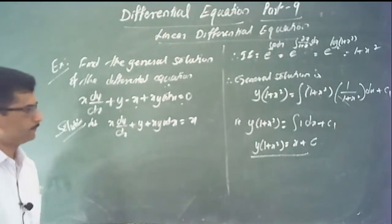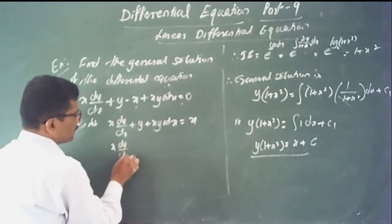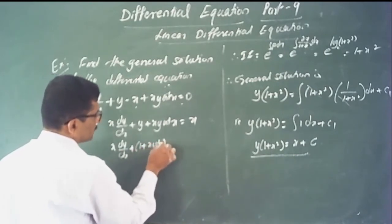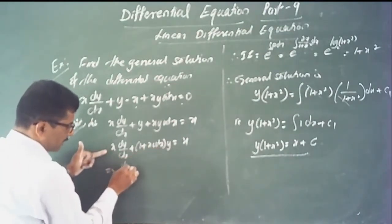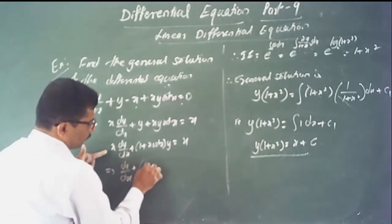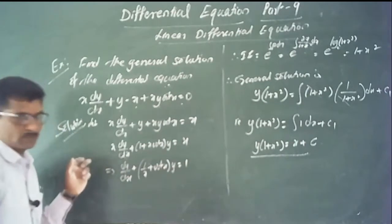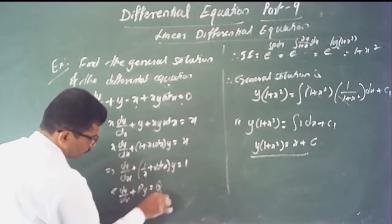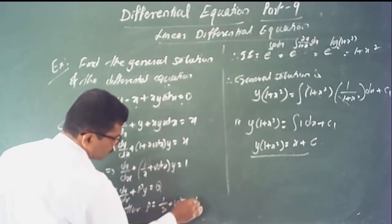Rewriting: y is common in two terms, giving x dy/dx plus (1 plus x cot x) y equals x. Dividing each term by x, the standard form is dy/dx plus (1/x plus cot x) y equals 1, which is in the form dy/dx plus p times y equals q. Here p equals 1/x plus cot x and q equals 1.